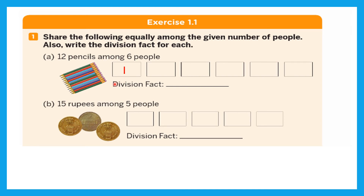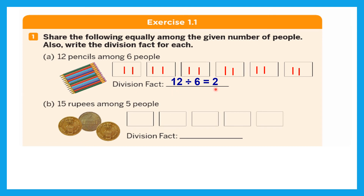Starting from the first box, we share: first pencil, second, third, fourth, fifth, sixth pencil — one to each person. Then the seventh, eighth, ninth, tenth, eleventh, and twelfth pencils are distributed again one each. All twelve pencils have been shared among the six people. Each person got two pencils — this is equal sharing. The division fact is: 12 divided by 6 equals 2. Here, 12 is the total number of pencils — always write the total first — divided by 6 people, so each person got 2 pencils.